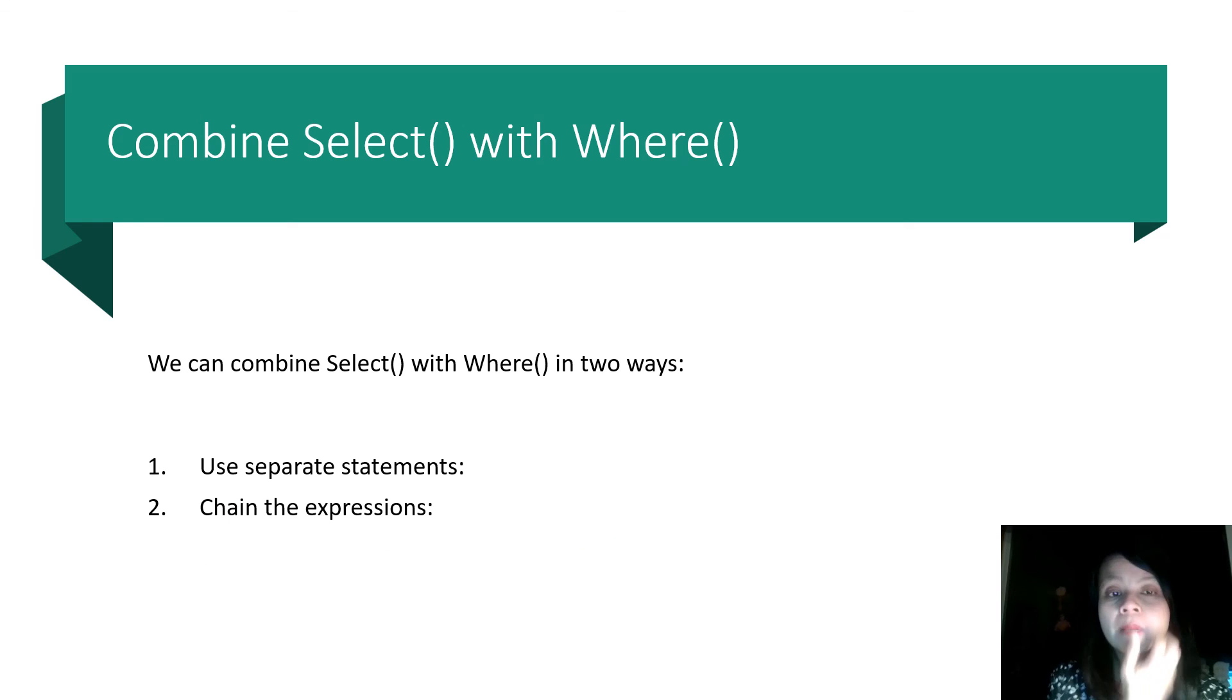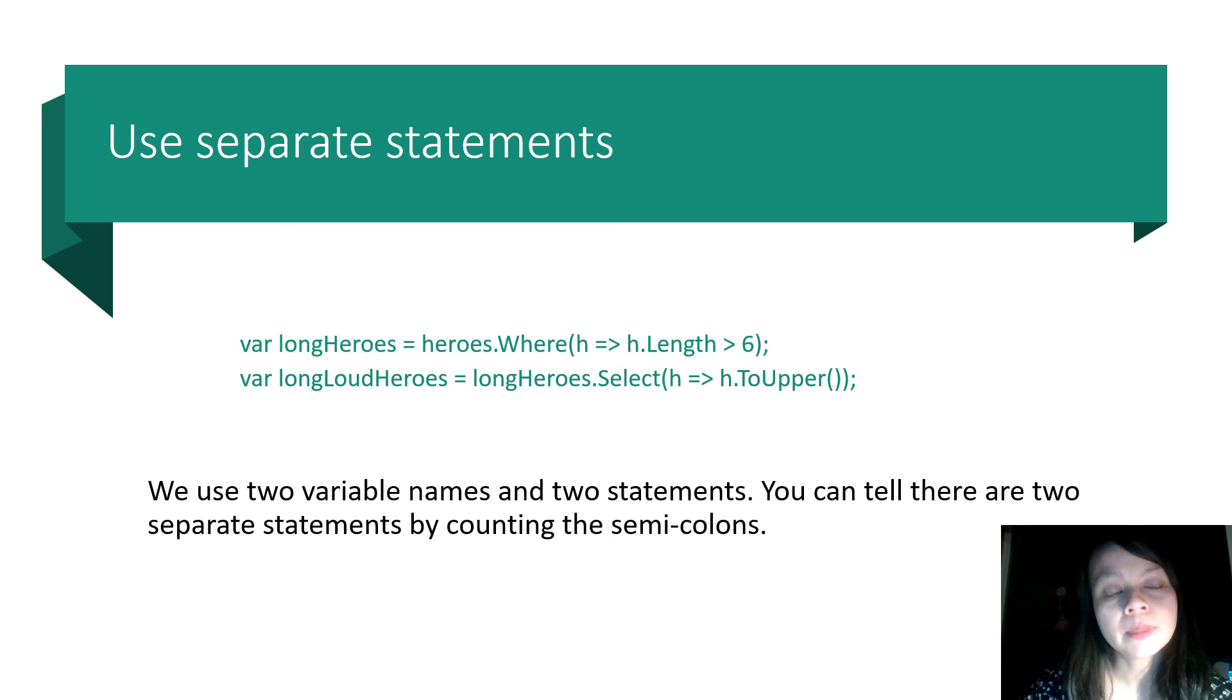So we can combine select and where in two ways. We can use separate statements or you can chain the expressions. We use two variable names and two statements. You can tell that there are two separate statements by counting the semicolons. One, two. And that's how you can tell that there are two separate statements.